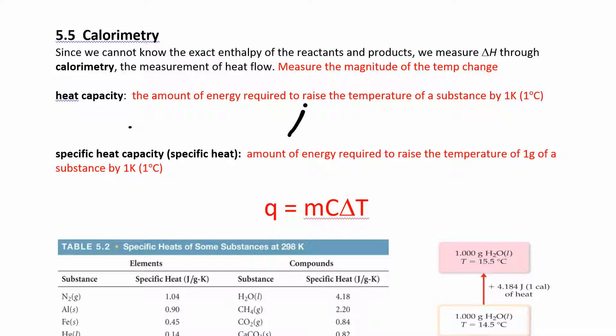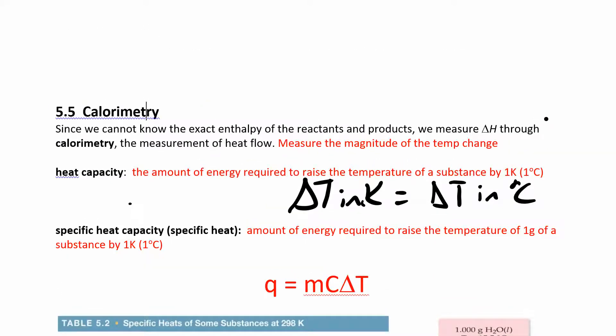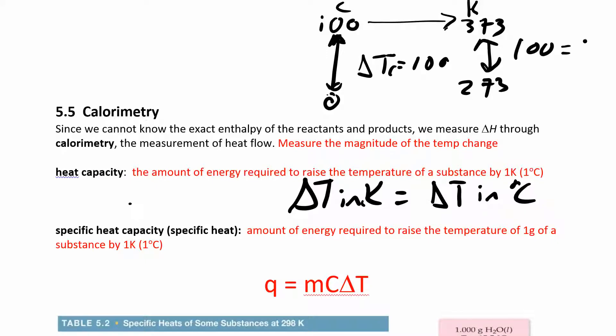So ΔT in Kelvin is the same as ΔT in degrees Celsius. If you had a temperature scale with 100 and 0 for Celsius, the difference between freezing and boiling, that ΔT in Celsius is 100. If you change all the Celsius into the Kelvin scale, you add 273. So this is 373 and this is 273. If you do the change in temperature, 373 minus 273, remember that delta is always final minus initial, you get 100 degrees here as well, 100 Kelvin. The change in temperature is the same whether you're talking about Celsius or Kelvin.